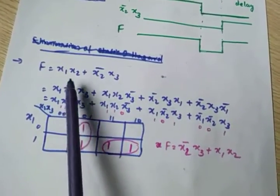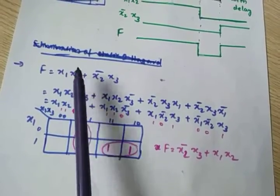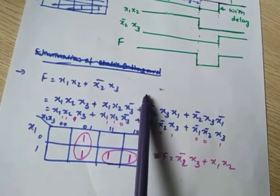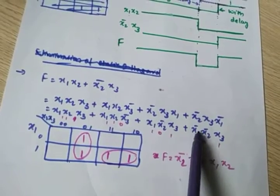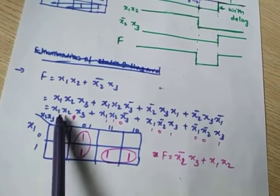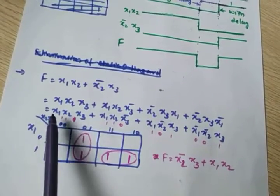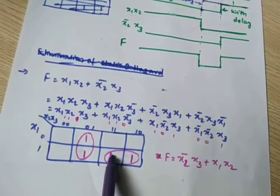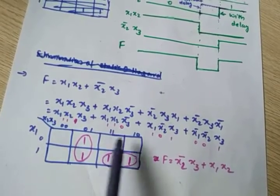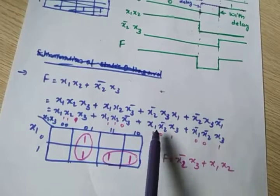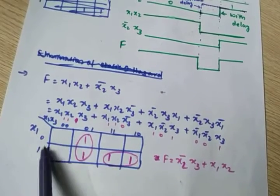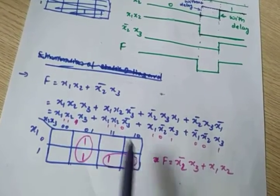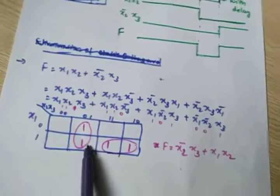So two ways are there. One is this: x3 is missing from x1x2, so multiply by (x3 + x3_bar) and expand. You will get the minterms. Substituting the coordinates: 1-1-1, 1-1-0, 1-0-1, and 0-0-1 in the K-map for axes x1, x2, x3. For bar variables put 0, otherwise put 1 — so you can map the corresponding minterms easily.